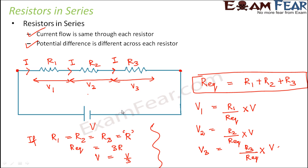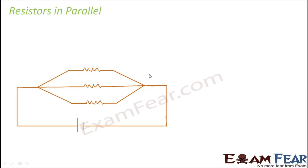So in series, the current is the same through all resistors, but the voltage gets distributed among the three resistors. That's resistors in series.